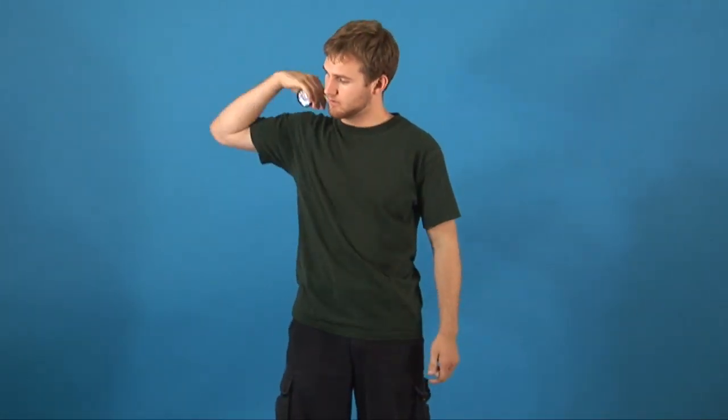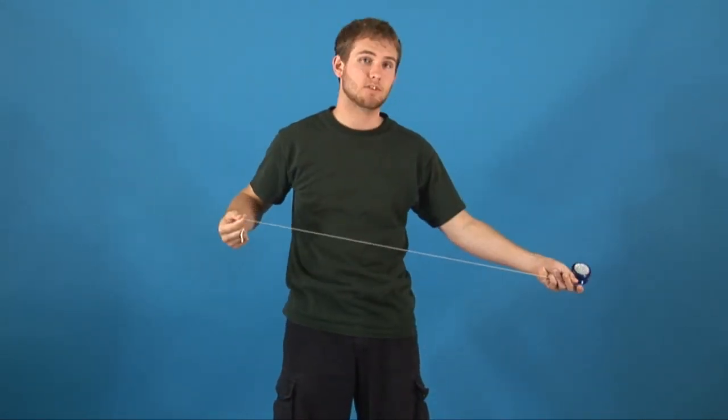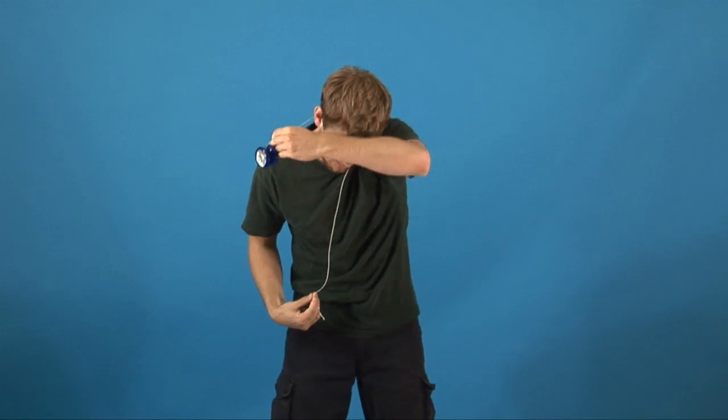When you're doing this trick, you want to start off by throwing a strong breakaway. And when you do the breakaway, you want to actually let the yoyo pass. Stick your head out and let the yoyo pass right around your neck.